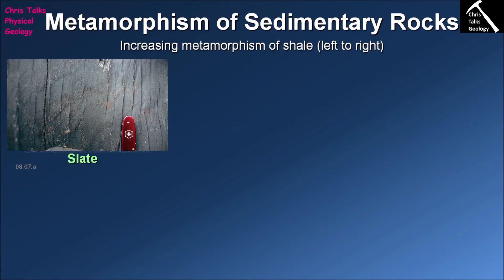Slates have a foliation — a cleavage — however the minerals that make up the rock haven't really changed yet. The temperature and pressure hasn't gotten high enough for the clay minerals to leave their stability field. The pressure has simply forced the clay minerals to reorientate themselves parallel to each other, and this is where the foliation comes from. We give this cleavage a specific term: slaty cleavage.